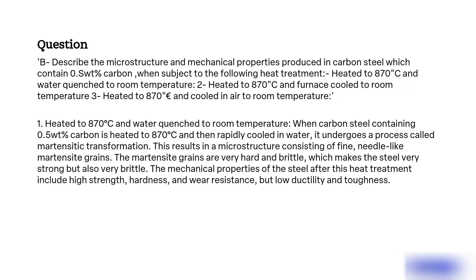1. Heated to 870°C and water quenched to room temperature. When carbon steel containing 0.5% carbon is heated to 870°C and then rapidly cooled in water, it undergoes a process called martensitic transformation. This results in a microstructure consisting of fine, needle-like martensite grains. The martensite grains are very hard and brittle, which makes the steel very strong but also very brittle.